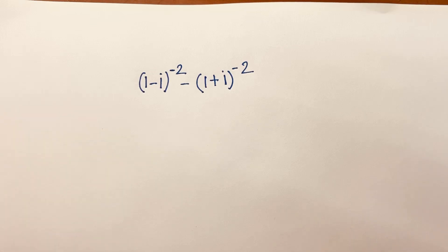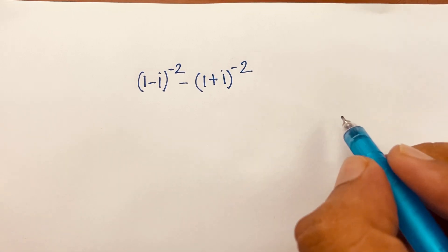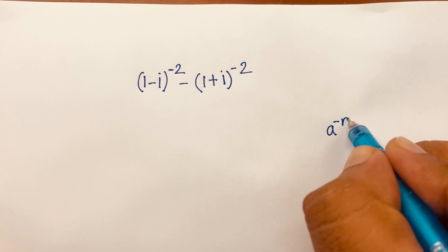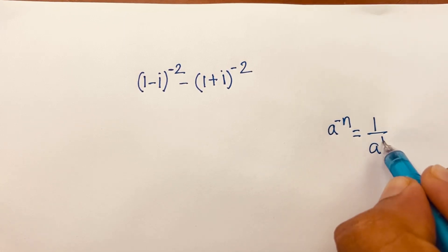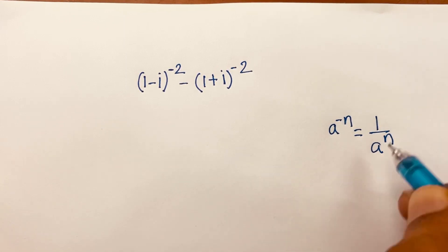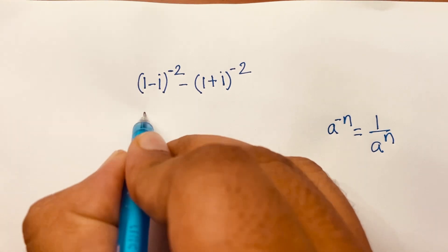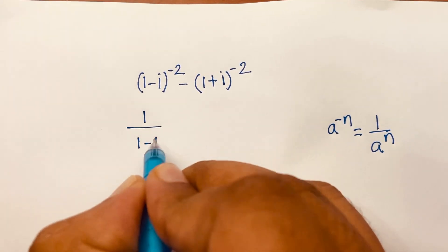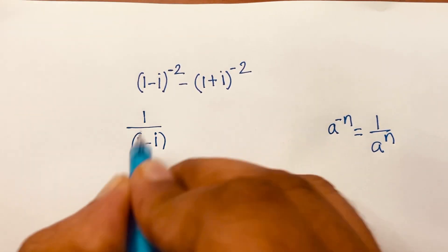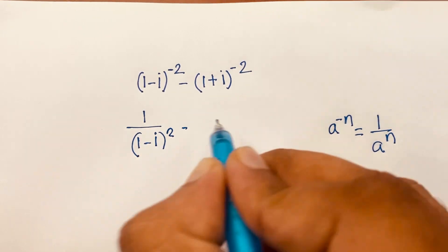How to solve (1-i)^(-2) minus (1+i)^(-2). First, you know that a to the power minus n is equal to 1 over a to the power n. According to this rule, I can rewrite it as 1 over (1-i)² minus 1 over (1+i)².